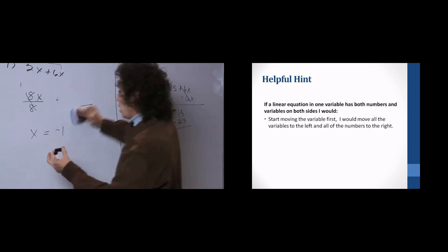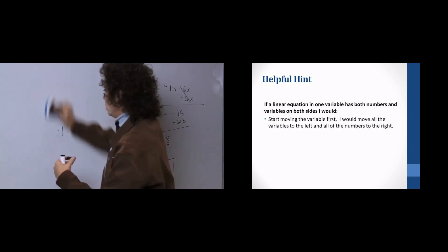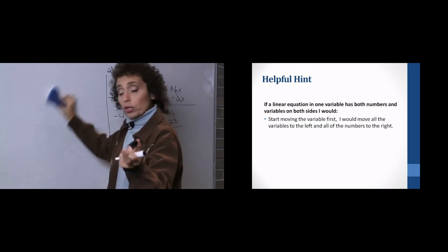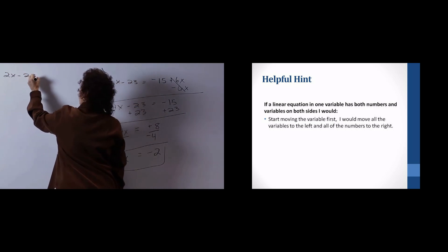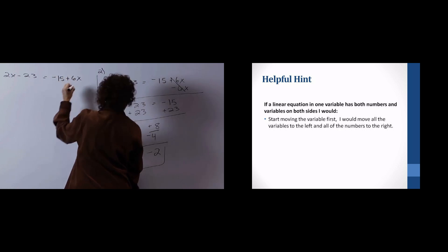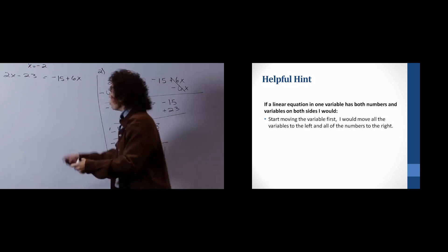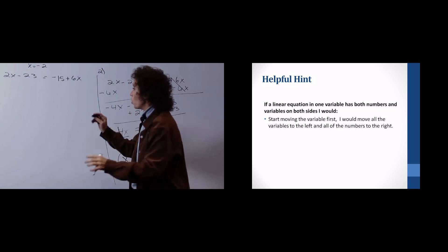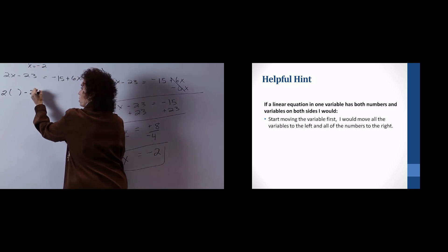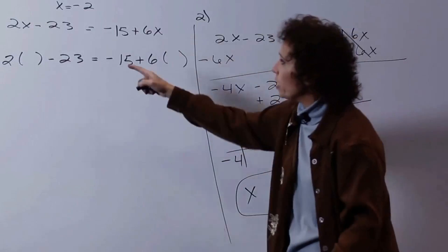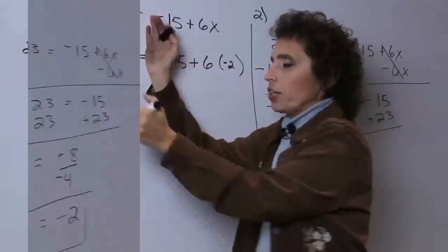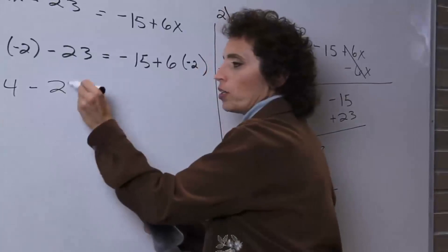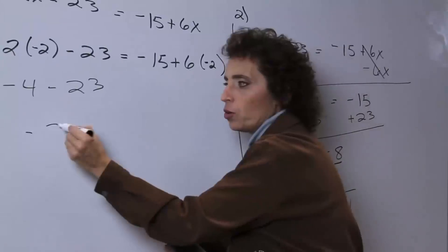So I'm going to put the check here. The equation is 2x minus 23 equals negative 15 plus 6x, and x is negative 2. Everywhere we see an x, we put in negative 2. So it's 2 times (negative 2) minus 23 on the left, and negative 15 plus 6 times (negative 2) on the right. Left side: that's negative 4 minus 23, and I owe you 4, I owe you 23, so I owe you 27.